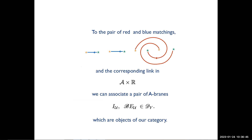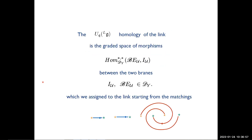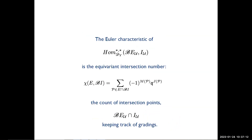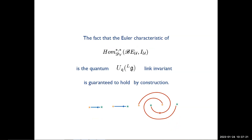To every pair of red and blue matchings, and hence to the corresponding link, we will associate a pair of A-branes which are objects of the category. The quantum group link homology will be the graded space of morphisms between the two branes. The Euler characteristic is simply the equivariant intersection number of the branes, which is the count of intersection points keeping track of gradings. The fact that the Euler characteristic is the quantum link invariant is guaranteed to hold by construction.